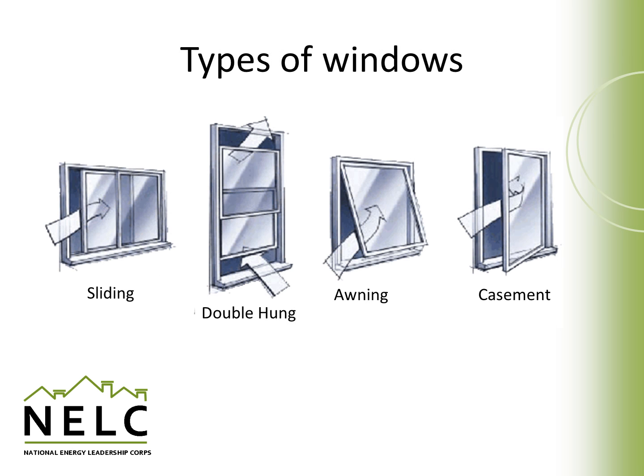There are variable types of windows that you'll encounter in a home. These are some of the more popular forms. Sliding windows move horizontally. They are often fairly inexpensive. They can, however, lose their seal over time and result in air leakage. Those seals around the sliding tracks can deteriorate over time.